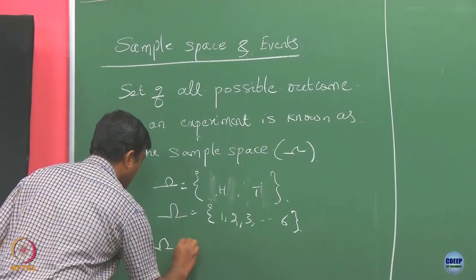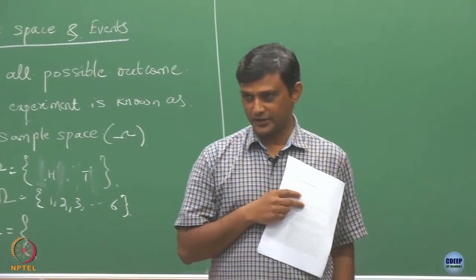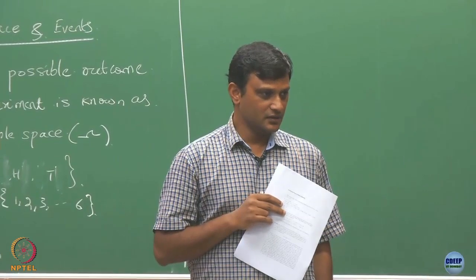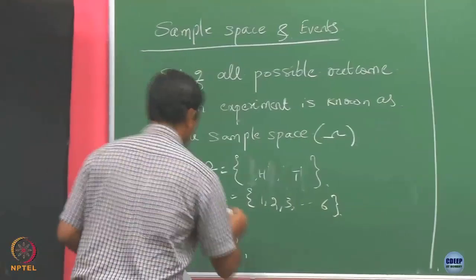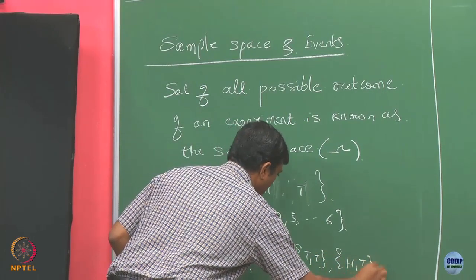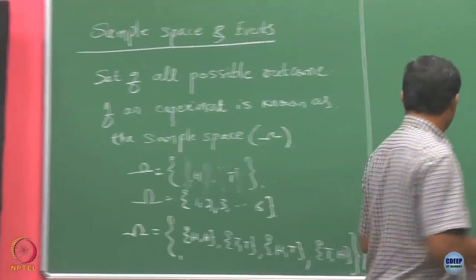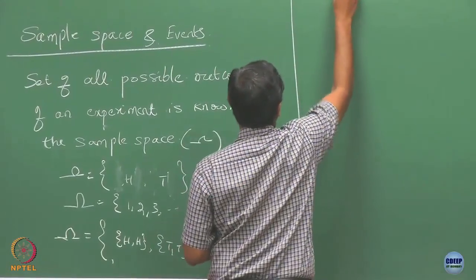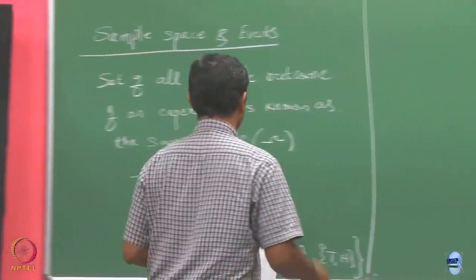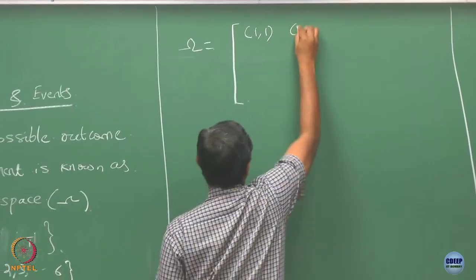Instead of one coin, suppose we take two coins and throw them — in each trial we toss two coins. What are the possible outcomes? We can see head-head on both coins, tail-tail, or first is head and other is tail. Similarly, if we throw two dice, what are the possible outcomes? There are 36 outcomes, and maybe the better way to represent that is through a matrix.